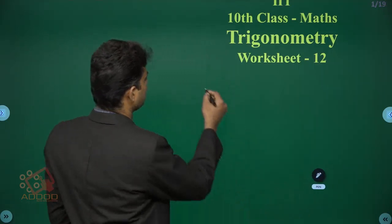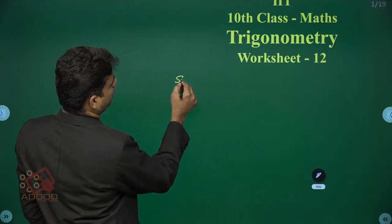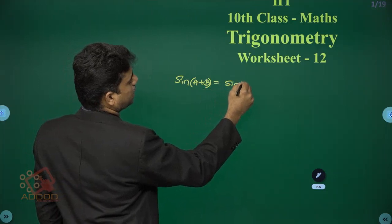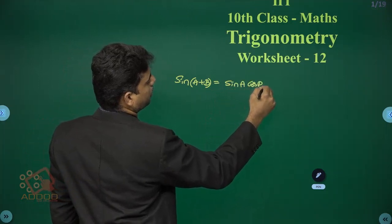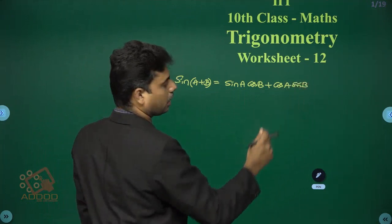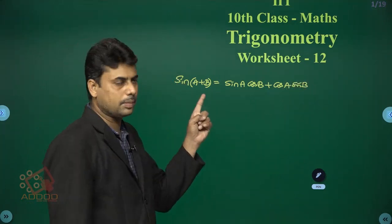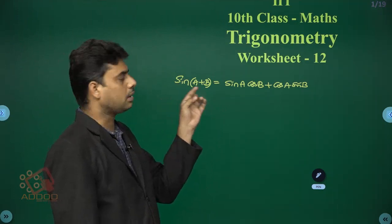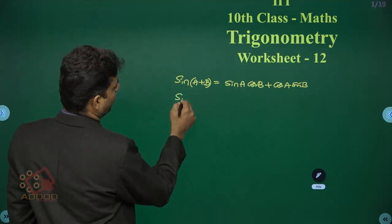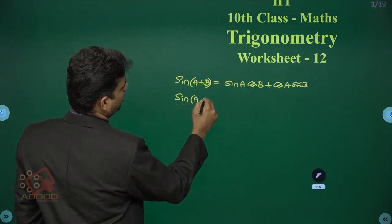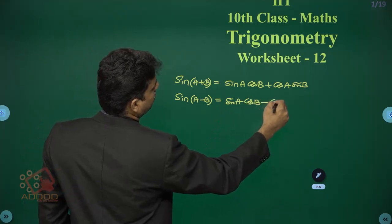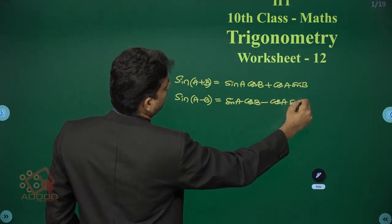You already know the formula for sin(a+b): sin(a+b) = sin a·cos b + cos a·sin b. Similarly, sin(a-b) = sin a·cos b - cos a·sin b.